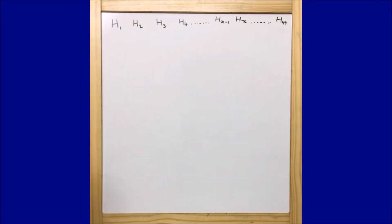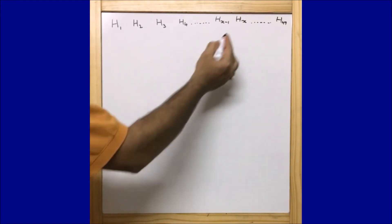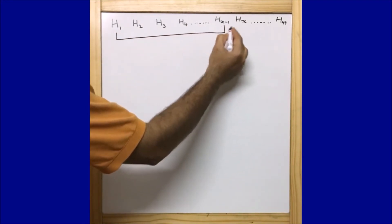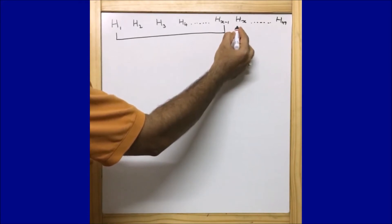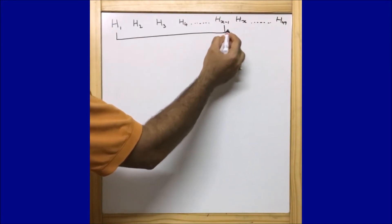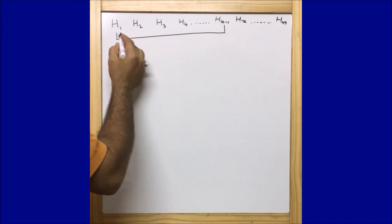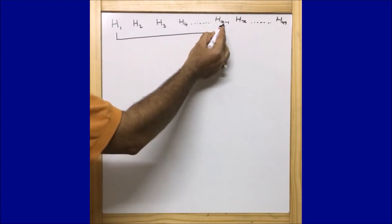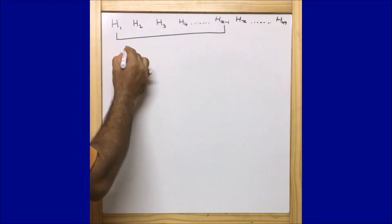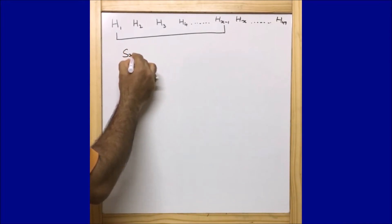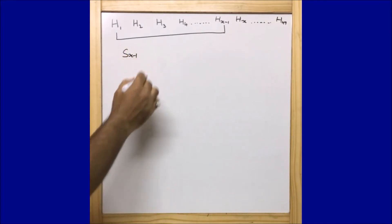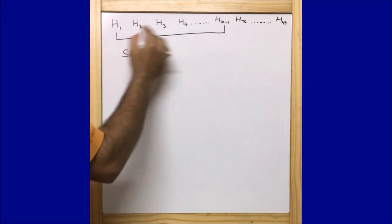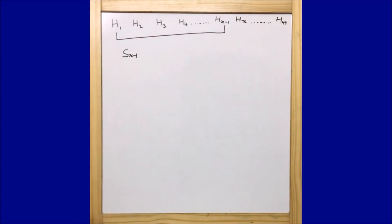Let us find the sum of the houses preceding house number x. This is house number x and we are considering the houses preceding it, which start from 1 and go up to x minus 1. So the sum of houses preceding x is S(x minus 1).